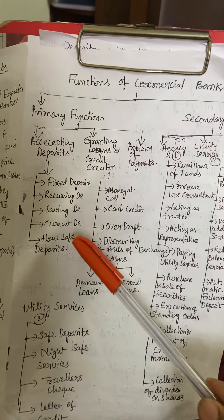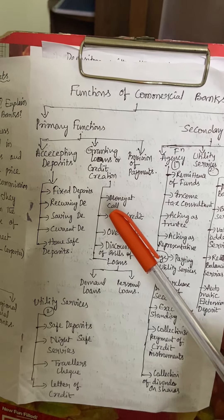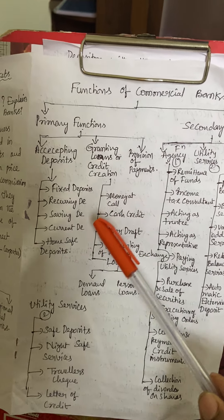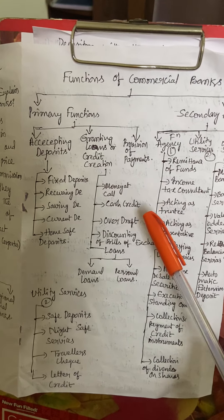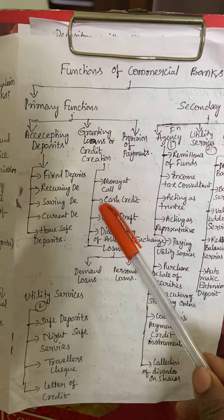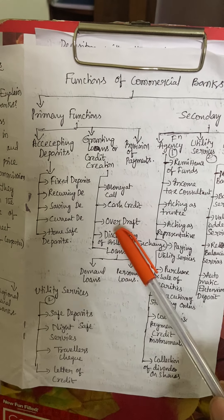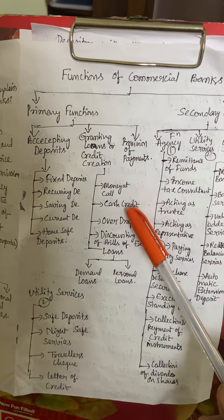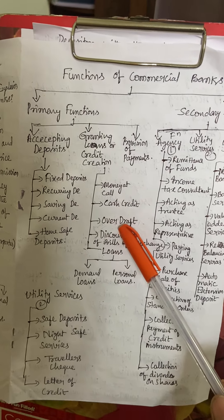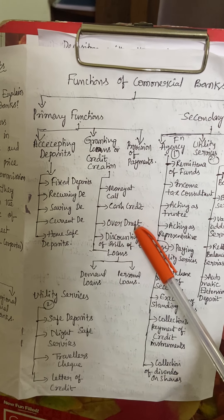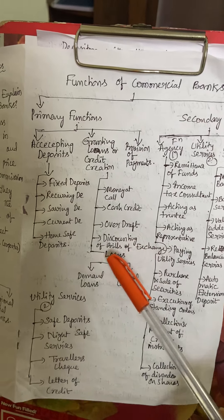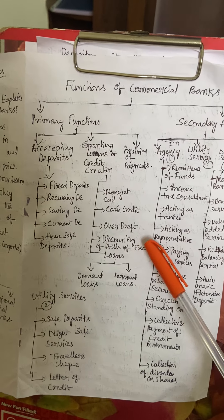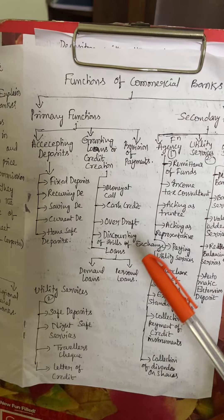The second primary function is granting loans. Granting loans can be in the form of money at call, which is a very short-period loan. Then cash credit — if the bank is providing credit in the form of cash, that is called cash credit. Third is overdraft, where more than the available account balance can be availed. And discounting of bills of exchange — these are the different kinds of loans or credit provided by commercial banks.